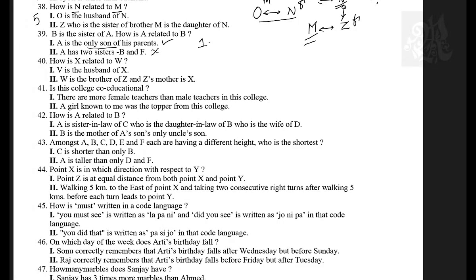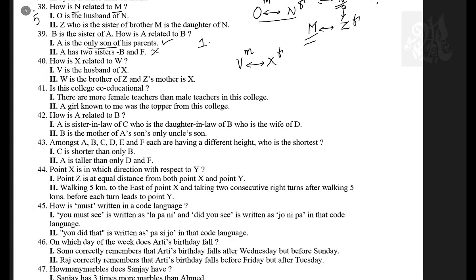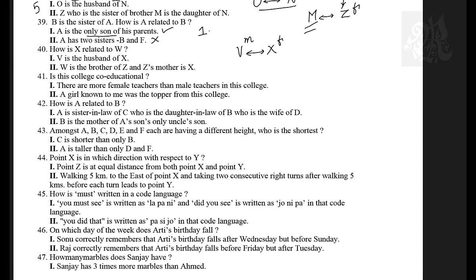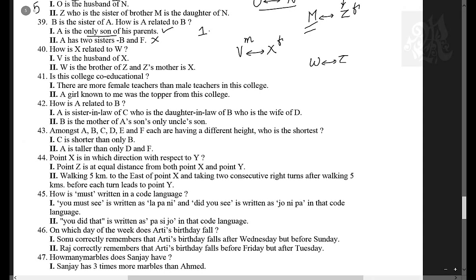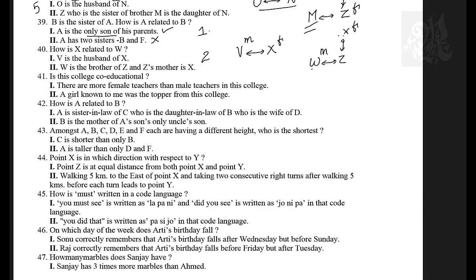How is X related to W? Statement one: V is the husband of X — so X is female, V is male, but W doesn't appear, so statement one is insufficient. Statement two: W is the brother of Z, and Z's mother is X — so W is male, and Z's mother is X, giving us the relationship between X and W directly. Answer: statement two alone is sufficient — option two.